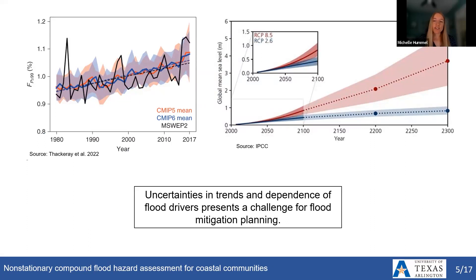However, there are substantial uncertainties in how these processes have changed in the past and how they will continue to evolve into the future. From a historical perspective, we often have a lack of observational data that limits our ability to model flood drivers, particularly extreme events which are less common in the historical record. Looking towards the future, projections of rainfall extremes and sea level rise are characterized by substantial uncertainties, and these uncertainties can compound when we consider the interactions and dependence between different flood drivers.